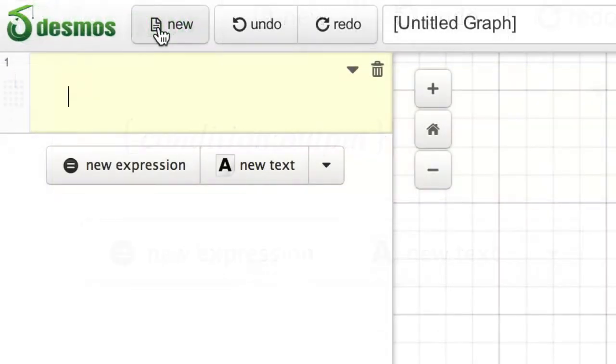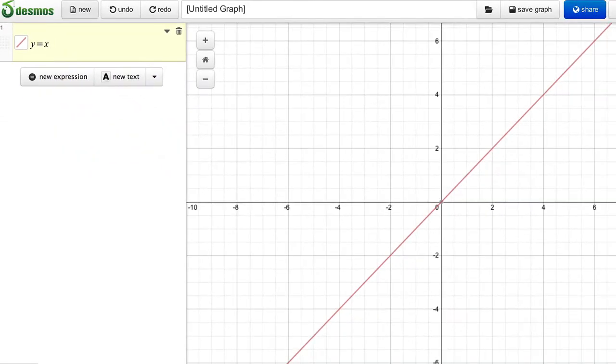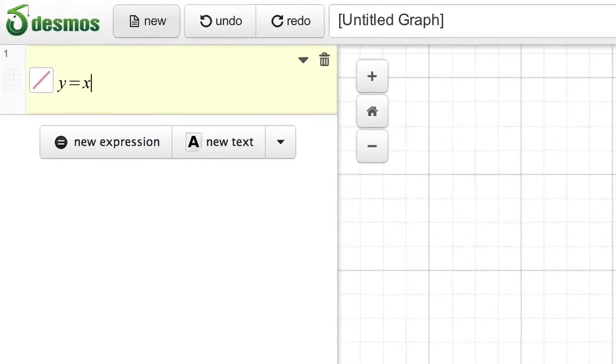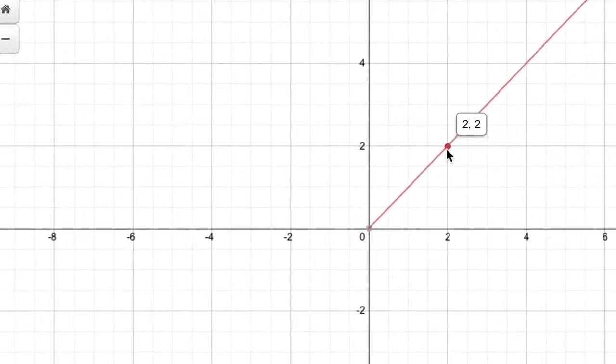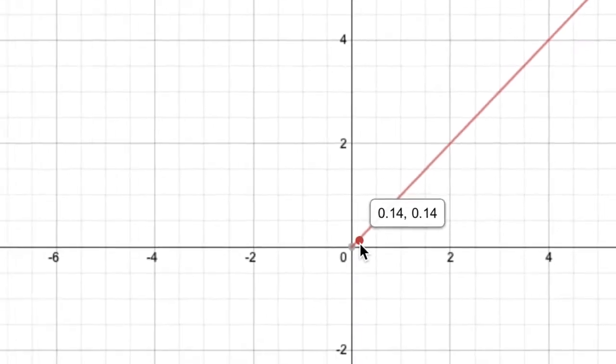Let's start with a simple example. Make a new graph and type y equals x. If we want to graph only the values greater than zero, we can change our equation to y equals open curly bracket x greater than zero colon x. This tells the calculator that for x values greater than zero, y equals x.